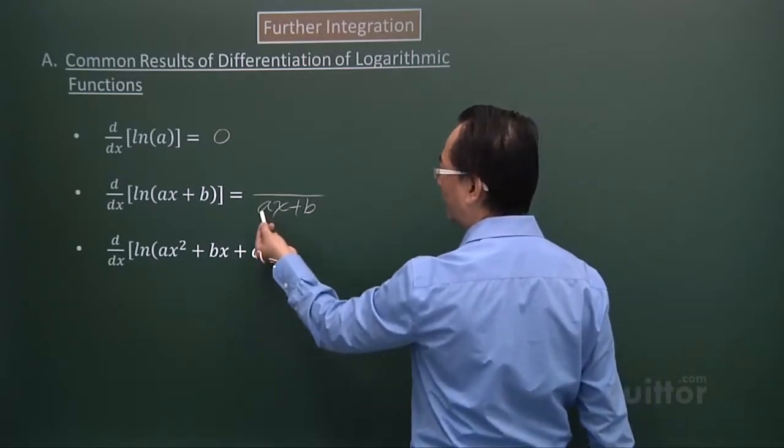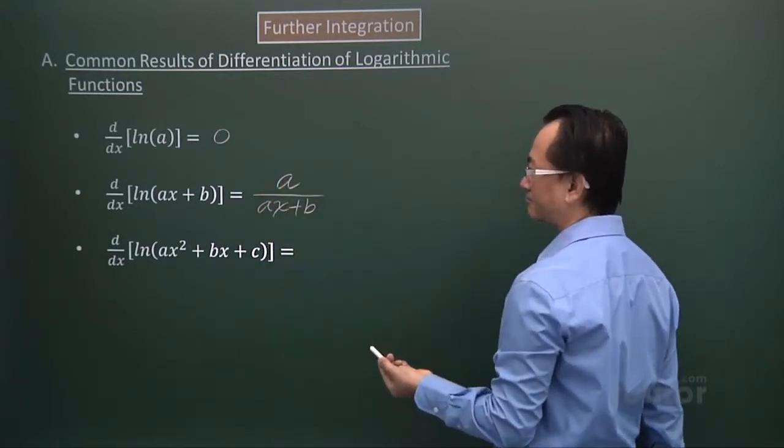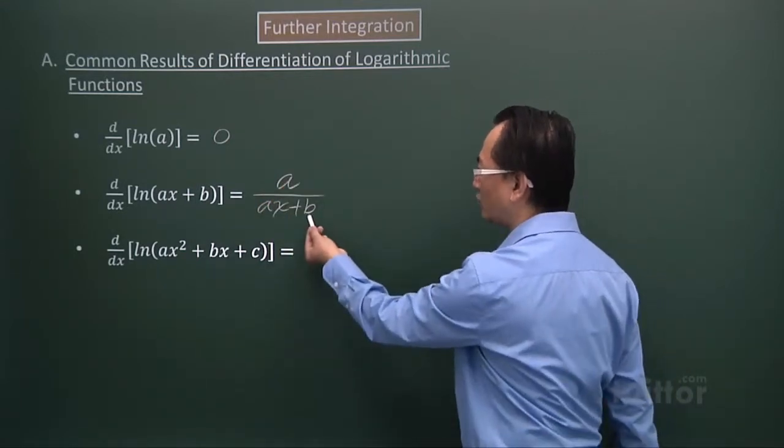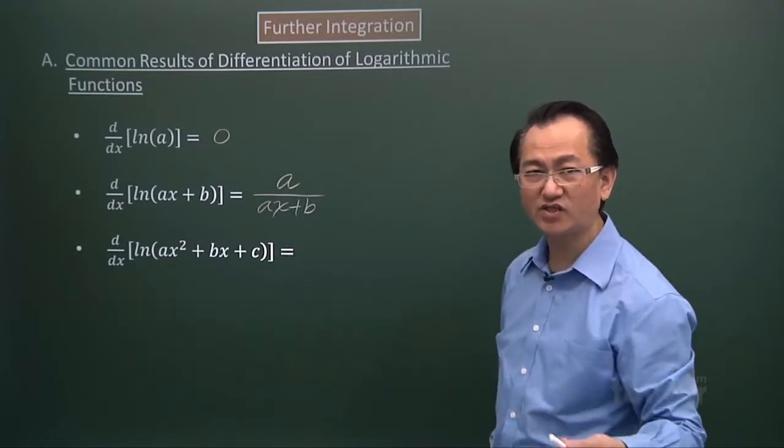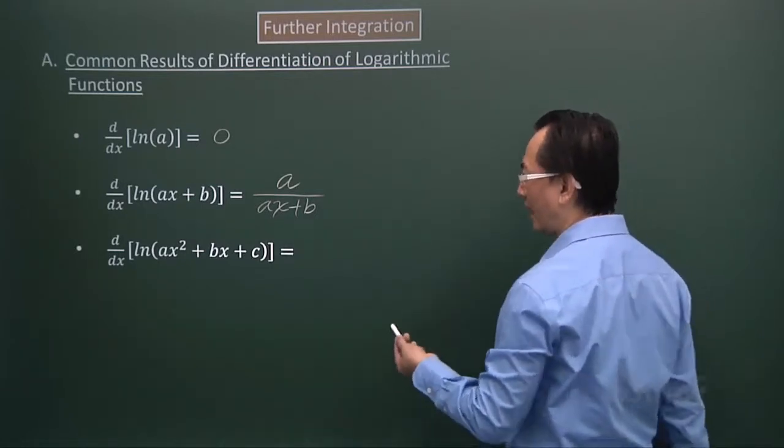The constant term will drop out because differentiating a constant I'll get a 0.